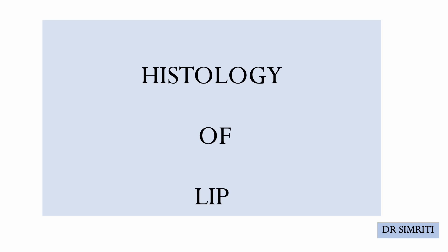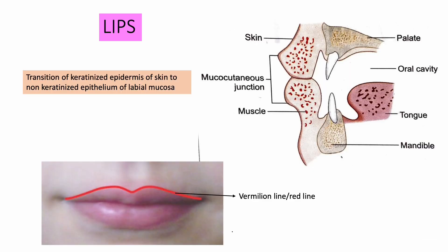Let's talk about the histology of the lip. We have the upper lip and the lower lip — these two lips are fleshy mucocutaneous flaps that form the boundary of the oral orifice. Each lip is covered externally by dry hairy skin and internally by the mucous membrane. In between the skin and the mucous membrane there is a transitional zone called the mucocutaneous junction, which is the transition from the keratinized epidermis of the skin to the non-keratinized epithelium of the labial mucosa.